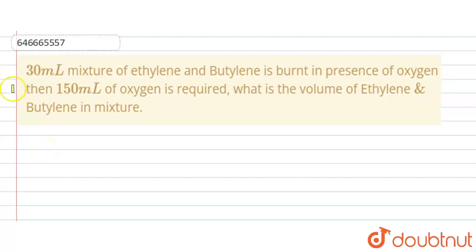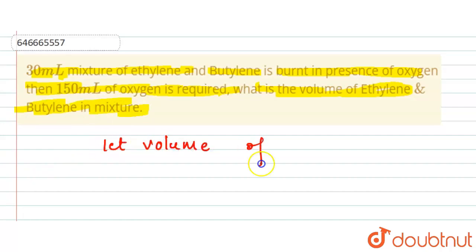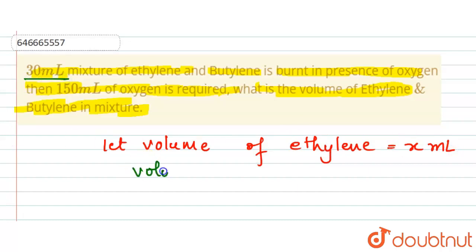The question is: 30 ml of a mixture of ethylene and butylene is burnt in the presence of oxygen, and 150 ml of oxygen is required. What is the volume of ethylene and butylene in the mixture? Let the volume of ethylene be x ml.